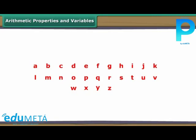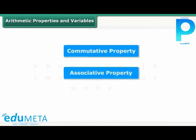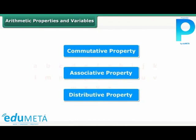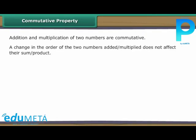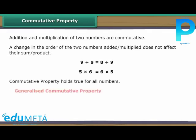Arithmetic properties and variables: Let us express some commonly used arithmetic properties with the help of variables. Commutative property: Addition and multiplication of two numbers are commutative. A change in the order of the two numbers added or multiplied does not affect their sum or product. 9 plus 8 is the same as 8 plus 9; 5 into 6 is the same as 6 into 5. We can generalize with variables: A plus B equals B plus A, and A into B equals B into A.